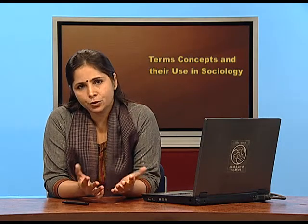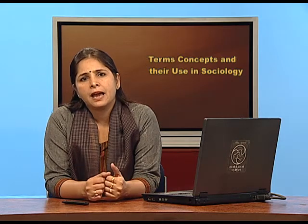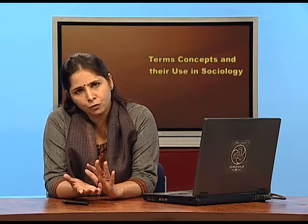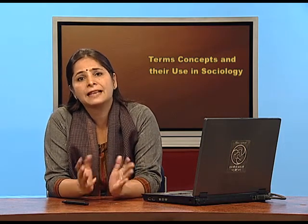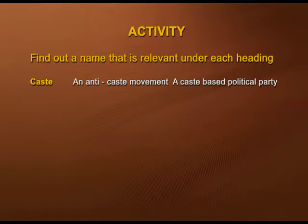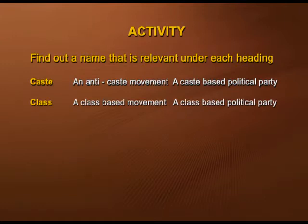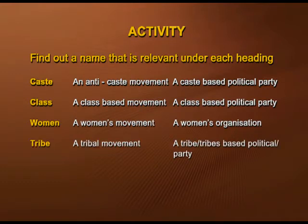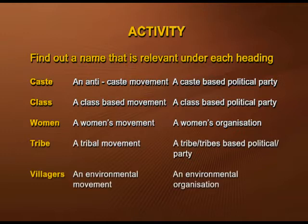To understand social groups better, let's do an activity. Consider different categories — caste, class, women, tribes, villages, and environment — and try to identify what movements exist for each and what political parties or organizations are associated with them. For example, can you name an anti-caste movement or a political party based on caste? Similarly, identify class movements, women's organizations, tribal movements, and environment movements.